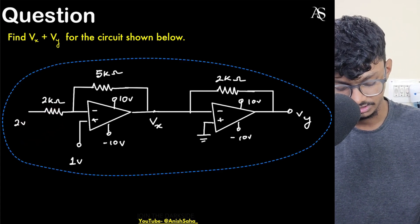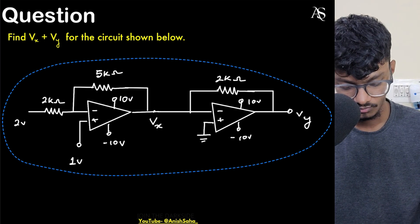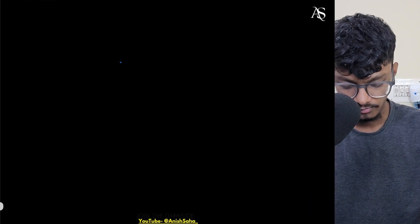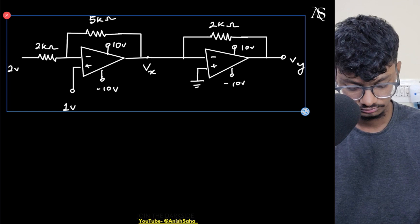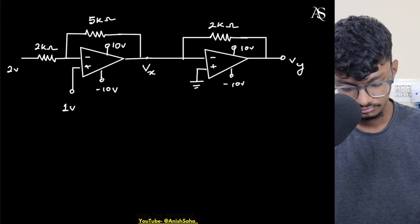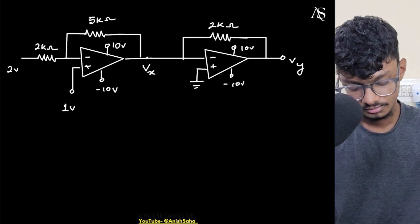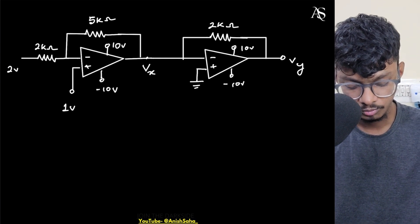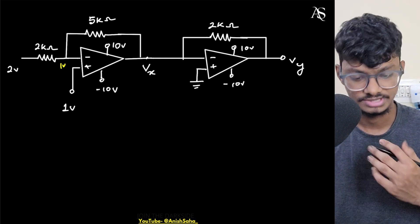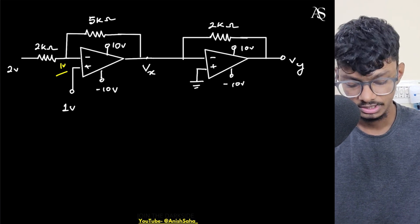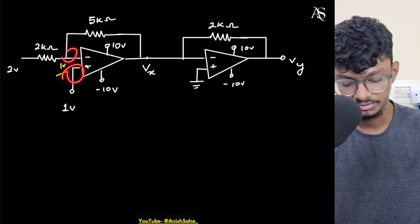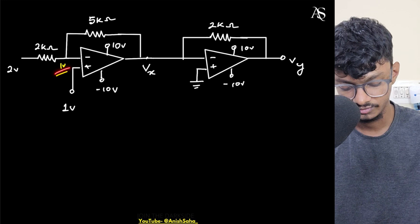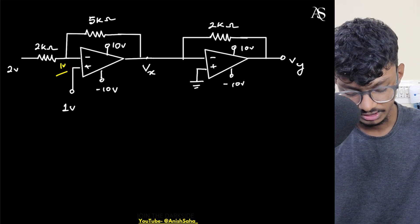So if I just copy this circuit, if virtual ground concept is applicable, this will be one volt. And like this, both terminals potential will be same, so this will be one volt. If this is one volt, so I can apply the KCL.